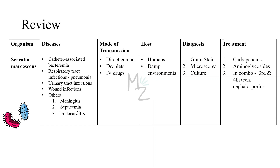Quick recap: Serratia marcescens causes catheter-associated bacteremia, respiratory tract infections like pneumonia, urinary tract infections, wound infections, and other infections including meningitis, septicemia, and endocarditis. Transmission is via direct contact with the organism or its droplets. People who use IV drugs are at increased risk. Hosts are humans and damp environments. Diagnosis is based on gram staining, microscopy, and culture. Treatment uses carbapenems and aminoglycosides in combination with third- and fourth-generation cephalosporins.